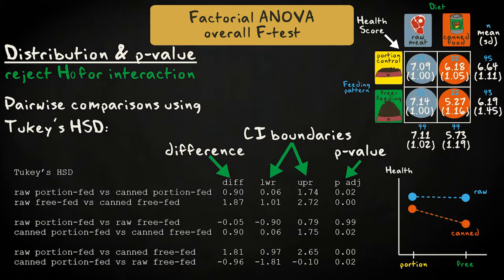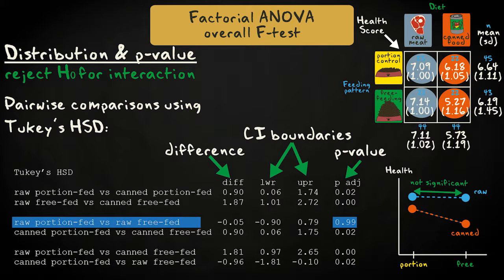If we perform pairwise tests or confidence intervals for the simple effects, using Tukey's correction for overall alpha, we see that a raw meat diet shows a significantly higher mean health score than canned food for both portion-controlled and free-fed cats. This effect of diet is stronger when cats are free-fed. The effect of raw meat is the same for portion-controlled and free-fed cats.